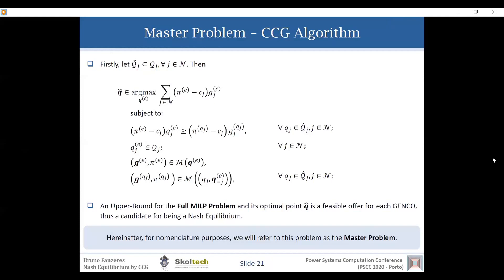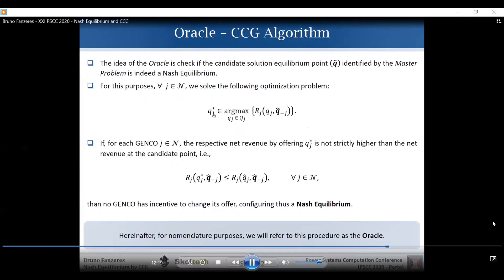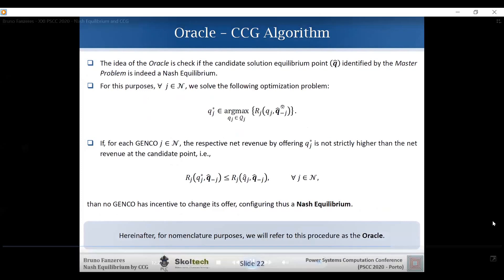Right, so, by identifying this candidate, we need to check, actually, if this candidate is indeed a Nash equilibrium. So, we designed an oracle to see, to tell if this point, this equilibrium, this candidate point, is indeed a Nash equilibrium. And the oracle, the idea of the oracle, is basically to identify the best response of each market participant with respect to the candidate point of its rivals, of its competitors. And, if, at this best response, the net revenue is lower than the net revenue at this candidate point. Then, no generational company or no market participant has incentive to change its offer, thus configuring a Nash equilibrium point.